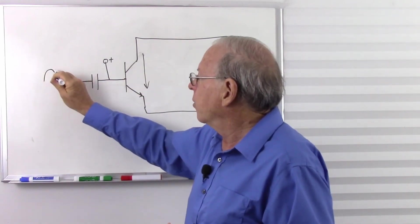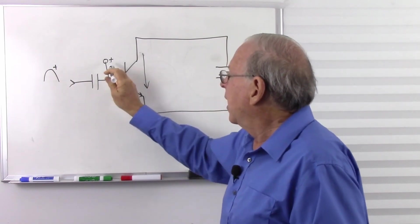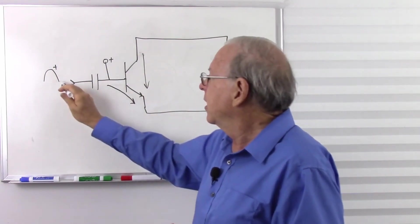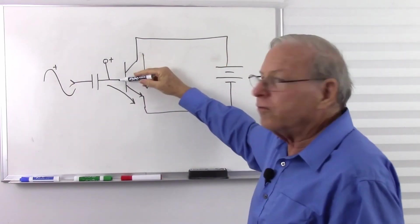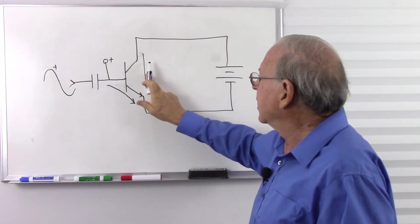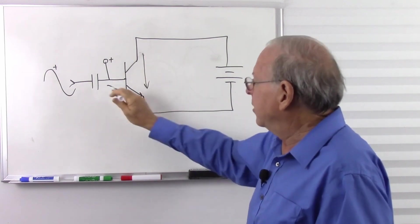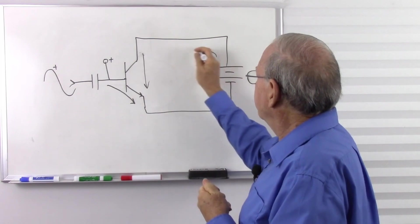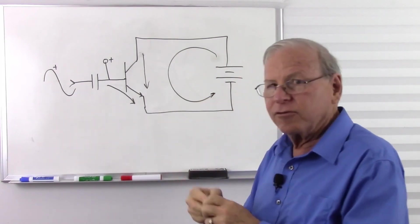And therefore, as this goes more positive, we get a higher voltage here. Therefore, we get more base current, and therefore more collector current. As this goes more negative, that pulls this voltage down, and so we get less base current and less collector current. And we're just looking at conventional current because that's what we usually do with transistors.